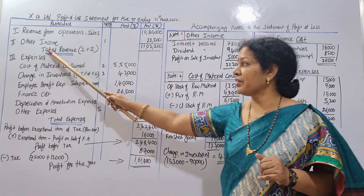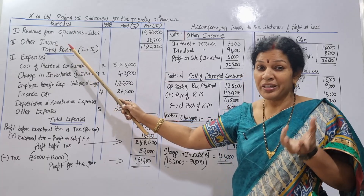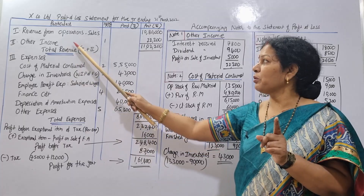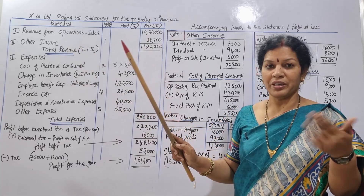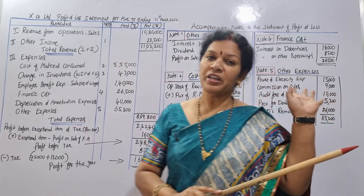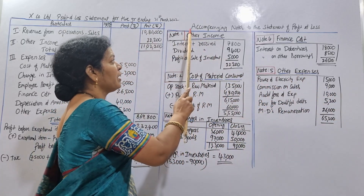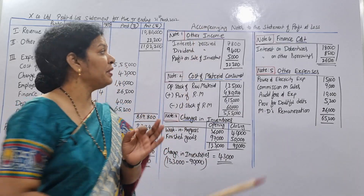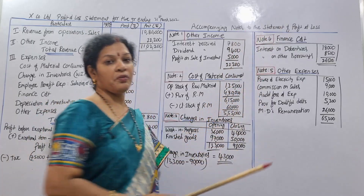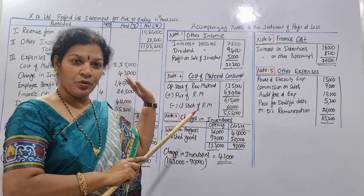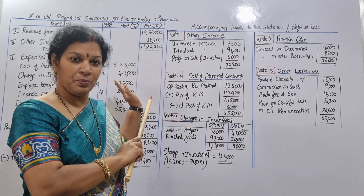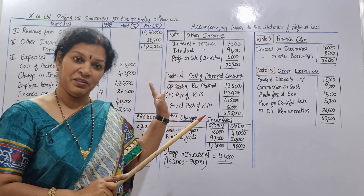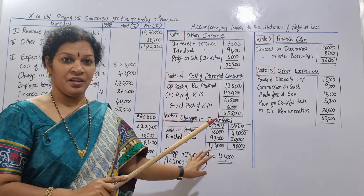Next is other income. We have a few income items under other income, and these require a note. The heading is 'Accompanying Notes to the Statement of Profit and Loss.' These are not working notes — they are formal accompanying notes. If you have multiple other incomes such as interest received, dividend received, or profit on sale of investment, you list them all in this note.